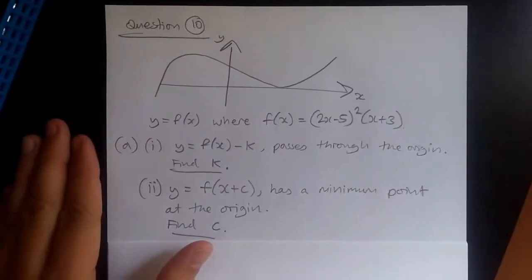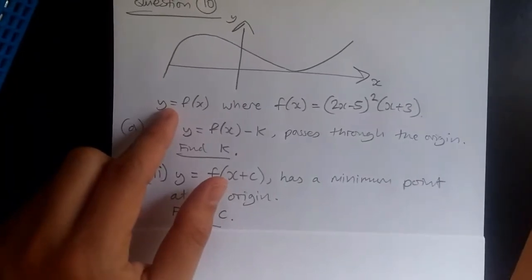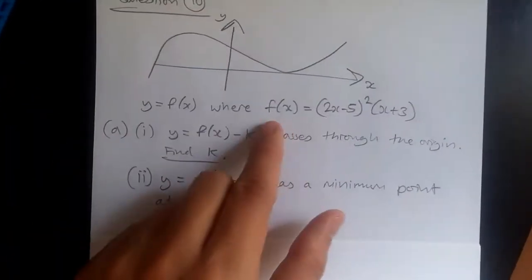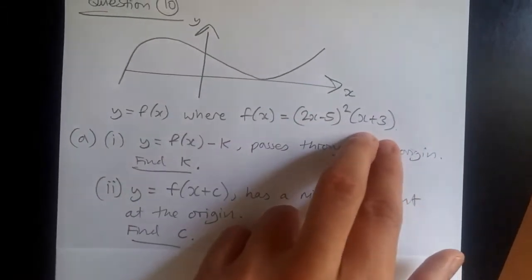So here we are at number 10. We're given a nice cubic curve where y equals f(x) and f(x) equals (2x-5)² times (x+3).